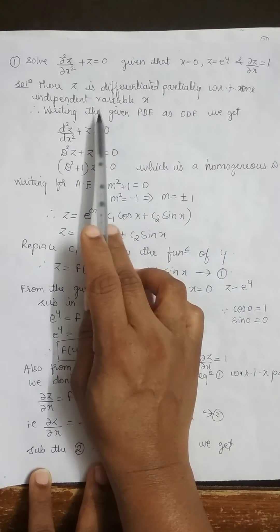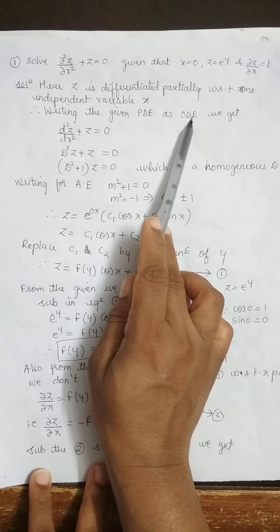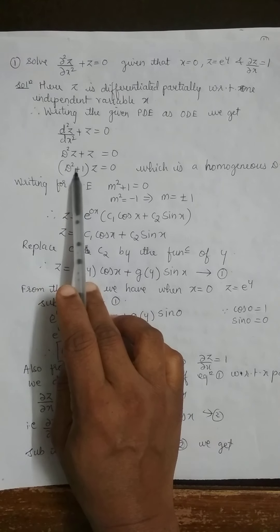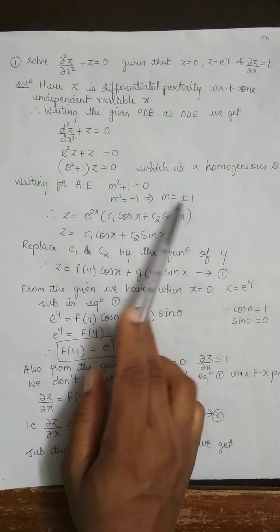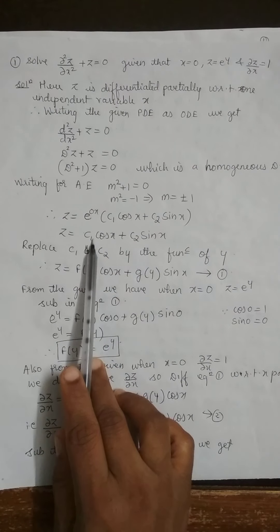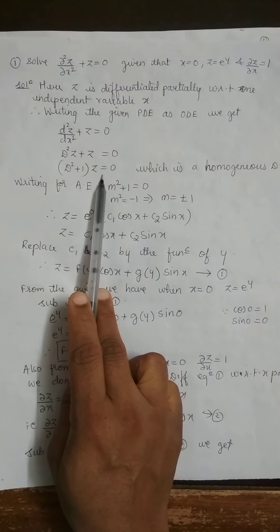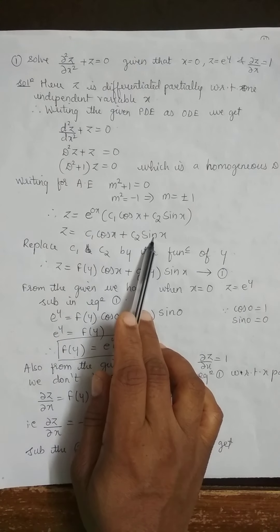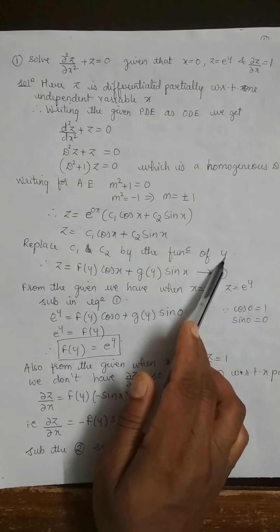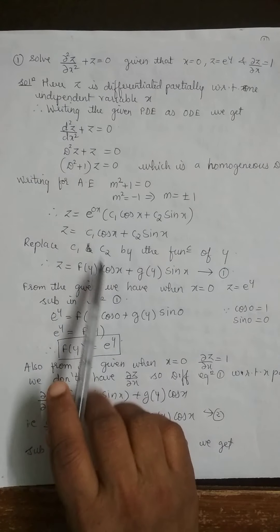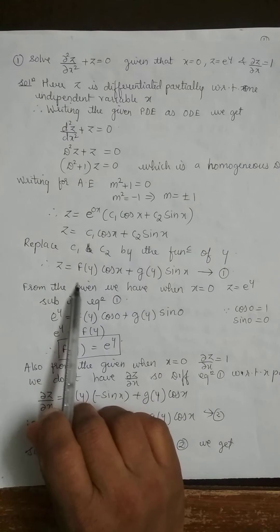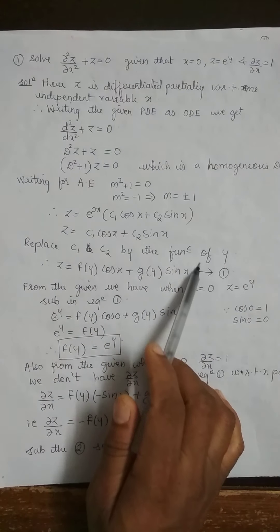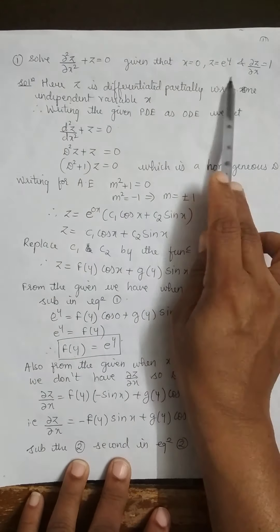Converting, we write d²z/dx² + z = 0. Writing the auxiliary equation, finding the roots, we get z = c₁cos(x) + c₂sin(x). Replacing c₁ and c₂ as functions of y, since the derivative is with respect to x, this becomes z = f(y)cos(x) + g(y)sin(x). Mark this as equation number 1. If no conditions were given, this would directly be the solution.